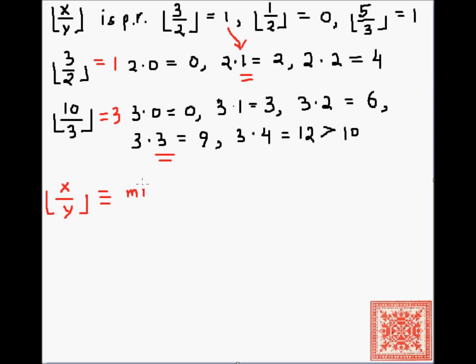We can formalize that insight as follows. The floor of x over y, where x and y are two natural numbers, is going to be the minimalization of z less than or equal to x, such that x is strictly less than z plus 1 times y.